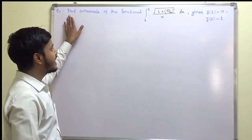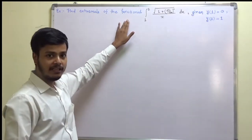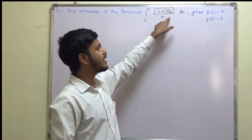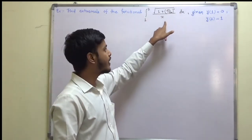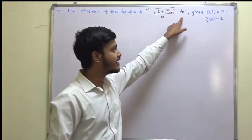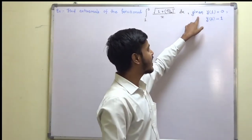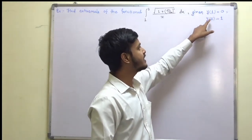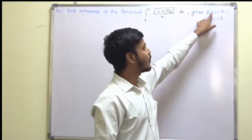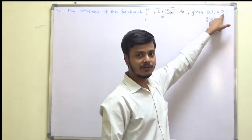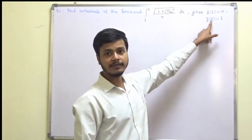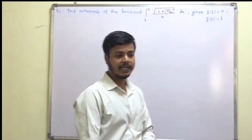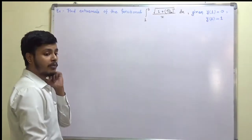The problem says: find the extremals of the functional — the integral from one to two of the square root of (1 + (dy/dx)²) / x dx. We are also given the conditions y(1) = 0, meaning when x equals one y equals zero, and y(2) = 1, meaning when x equals two y equals one.